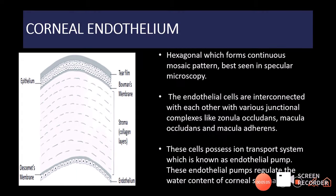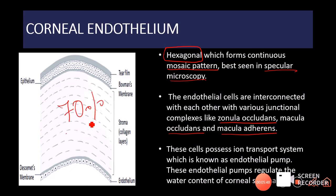Now let us talk about the corneal endothelium. The corneal endothelial cells are squamous but hexagonal in shape, arranged in a continuous mosaic pattern best seen on specular microscopy. They are interconnected via junctional complexes including zonula occludens, macula occludens, and macula adherens. These cells play a very important role in maintaining the state of relative hydration of the cornea — about 70% — which is essential for corneal transparency.